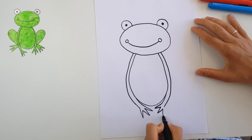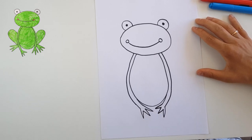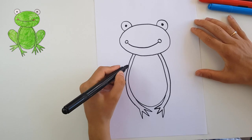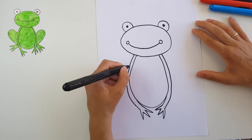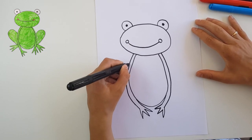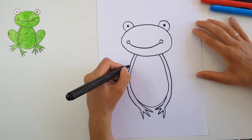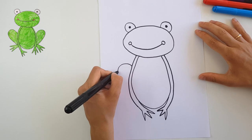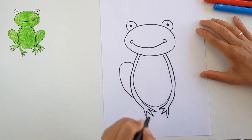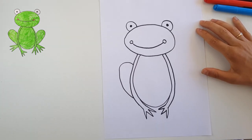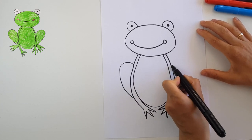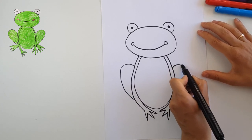Here we are. Let's draw the legs of the frog, the legs that are behind. Now let's try to draw the same shape on the other side.